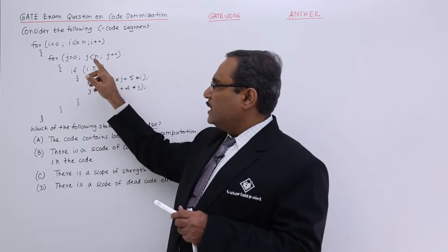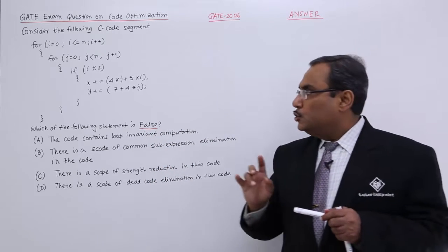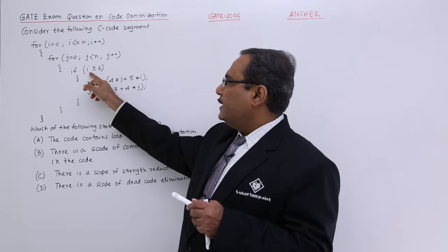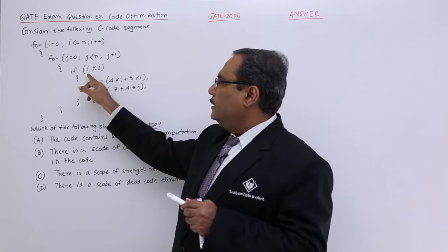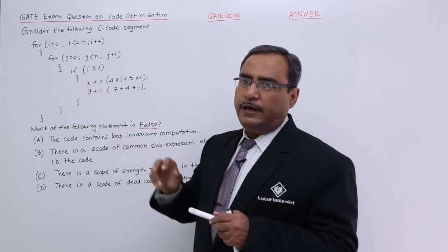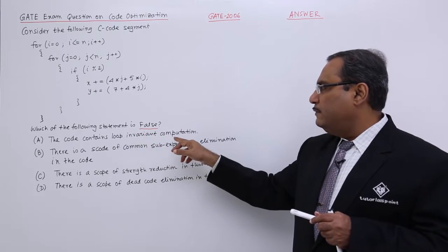In this particular code, this i will remain fixed for a certain iteration. This i in the inner loop which is for the control variable j is loop invariant variable. I am going for loop invariant computation.